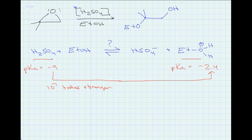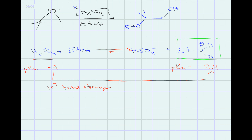From acid-base equilibria, the equilibrium wants to lie to the side of the weakest acid. That means for every 10 million molecules of protonated ethanol, we have only one molecule of sulfuric acid. So our equilibrium lies way to the right — we have way more protonated ethanol, and it's the species that behaves as the acid in our reaction mechanism.